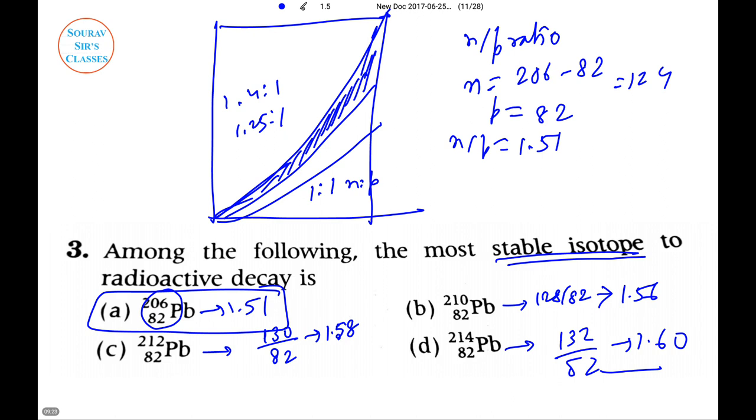Hence our answer is A. So this is the most stable isotope with respect to radioactivity. All you have to find is the n/p ratio and the lowest n/p ratio gives the best possible answer.